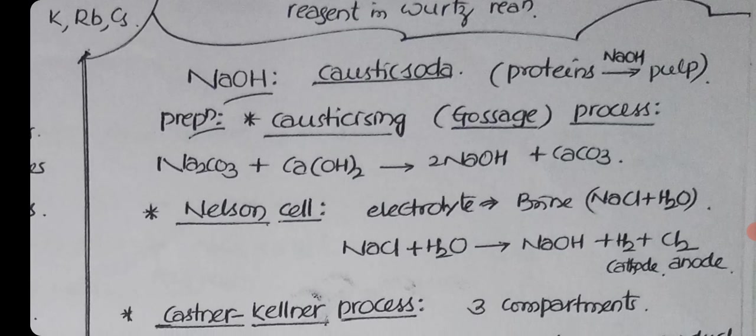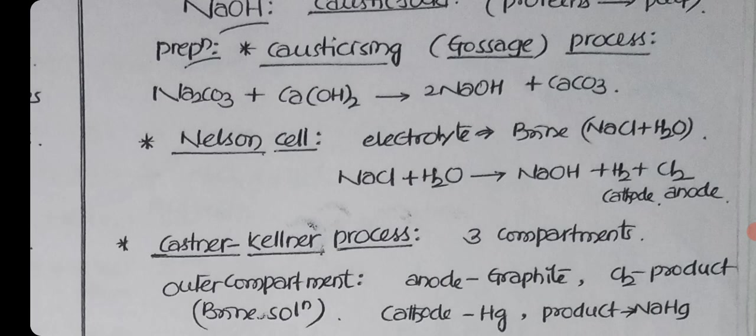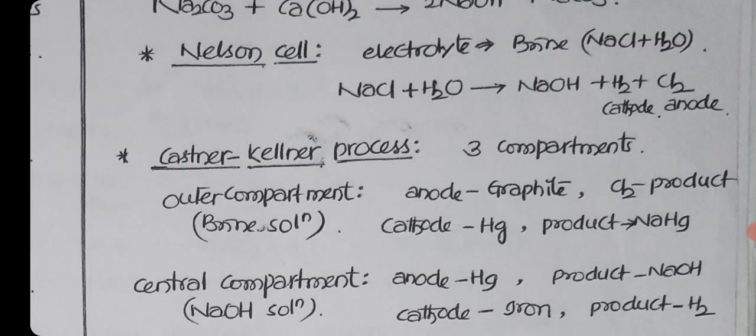Sodium hydroxide is called caustic soda. The meaning of caustic soda is it makes the protein part pulp. Preparation: causticizing process or gossage process. Sodium carbonate plus calcium hydroxide gives sodium hydroxide. The most important one is Nelson cell. Electrolyte is brine solution, NaCl plus water. The products are NaOH, hydrogen at cathode, and chlorine at anode. This is very important because hydrogen and chlorine are both important.